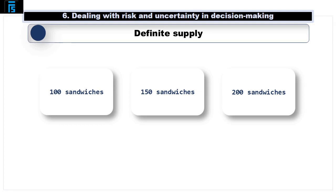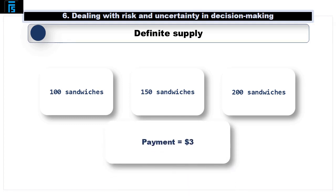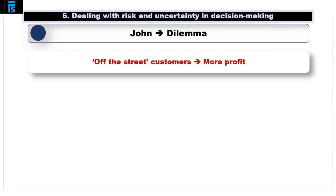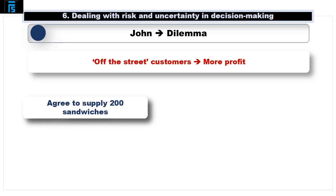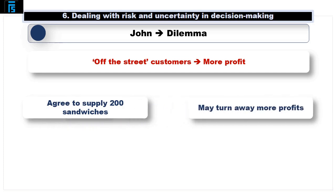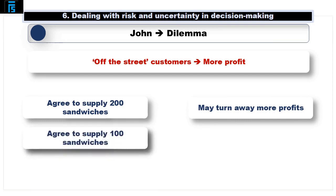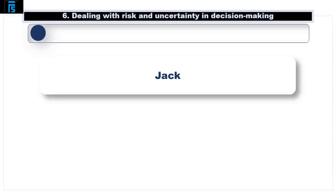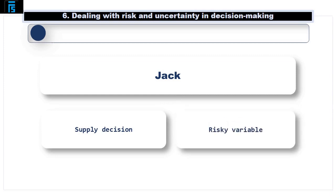The conference centre is only willing, however, to pay $3 a sandwich in view of their definite custom. Jack now faces a dilemma. His off-the-street customers earn him more profit. So if he agrees to supply, say, 200 sandwiches to the conference centre, he could easily be forced to turn more profitable business away. However, if he's only agreed to supply 100 sandwiches and demand from off-the-street customers is low, he might waste some of his capacity. Jack is trying to make a decision — how many sandwiches to supply to the conference centre — in the face of a risky variable: demand for sandwiches from off-the-street customers.